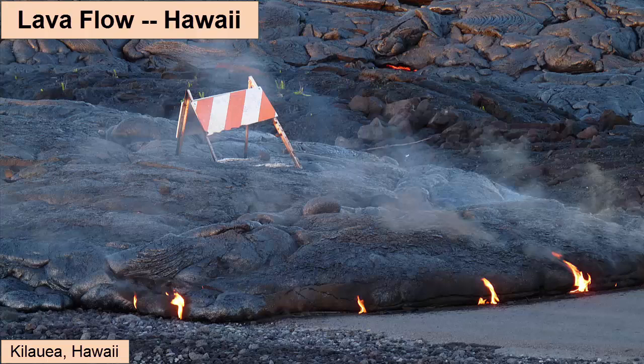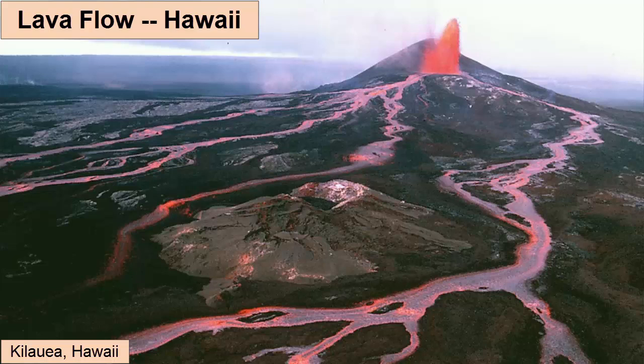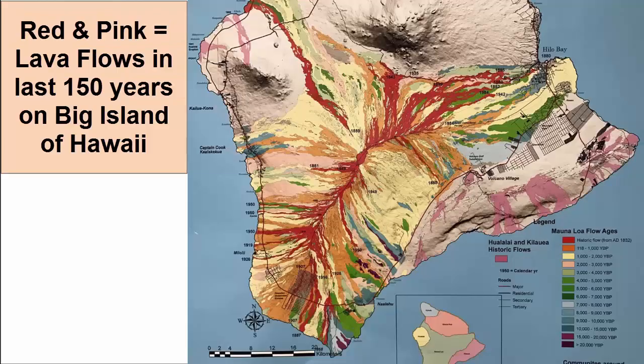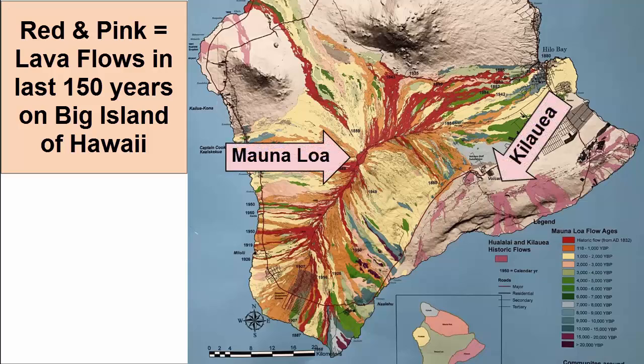Lava flows are rarely hazardous to human life. Even the fastest primitive lavas move at speeds of 4 km an hour and can be easily walked away from. But they can and do destroy human infrastructure that can't be moved, such as buildings, roads, and signs. Low viscosity primitive lava flows can travel tens of kilometers from the vent. People who live on the flanks of volcanoes with active lava flows must always be prepared to have eruptions in their backyard and potentially cover their property—a major problem for people who live on the active Big Island of Hawaii. This map shows in red the locations of lava flows over the past 150 years and shows the risk associated with continual eruption of the Mauna Loa and Kilauea volcanoes and even the slightly less active but still hazardous Hualalai volcano to the north.